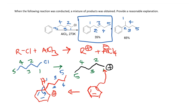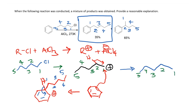If carbon-2 has a hydride, a hydride migration can occur, giving a more stable secondary carbocation where the positive charge moves from carbon-1 to carbon-2. If this secondary carbocation then reacts with benzene and loses a proton, you end up with the second, rearranged product.